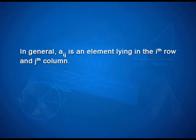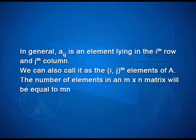In general, aij is an element lying in the ith row and jth column. We can also call it as ijth element of A. The number of elements in an m by n matrix will be equal to m into n or mn.